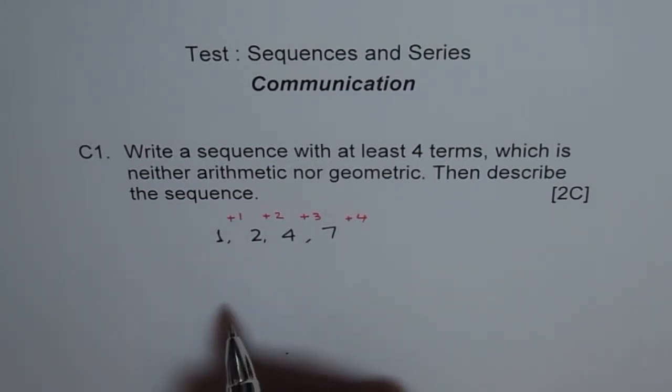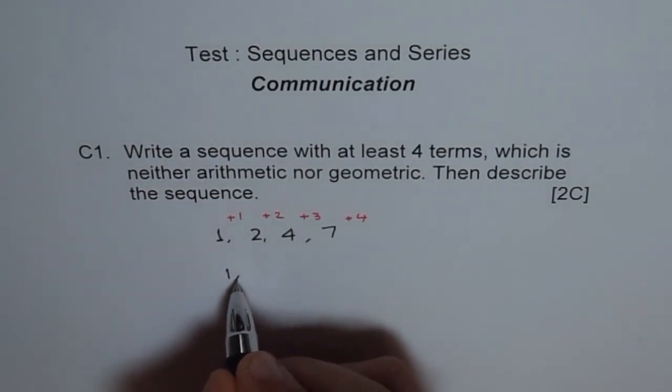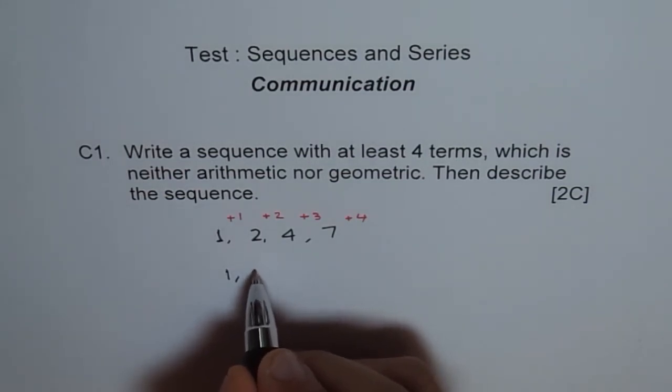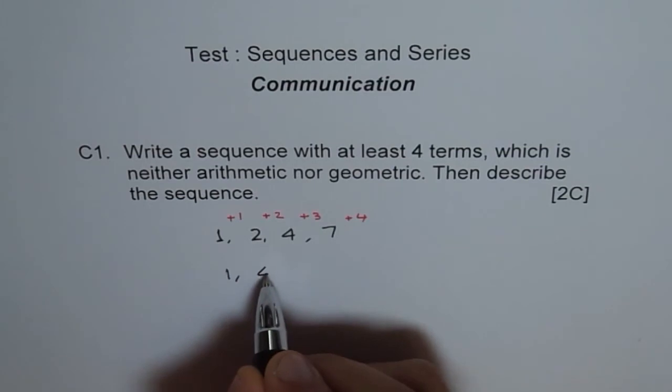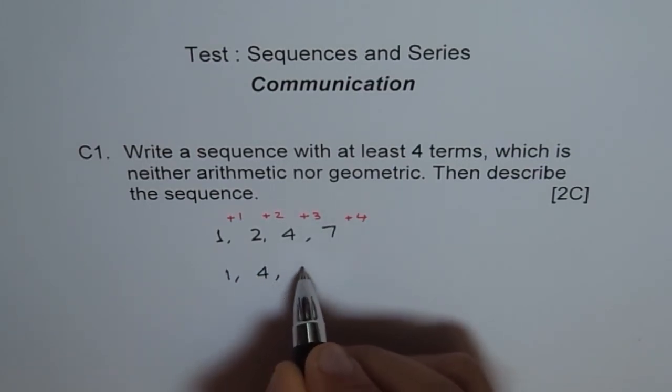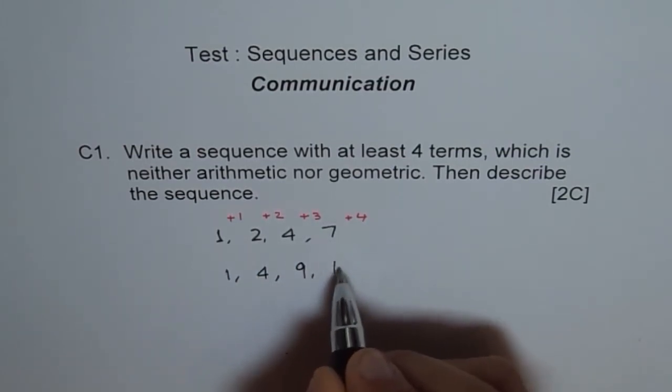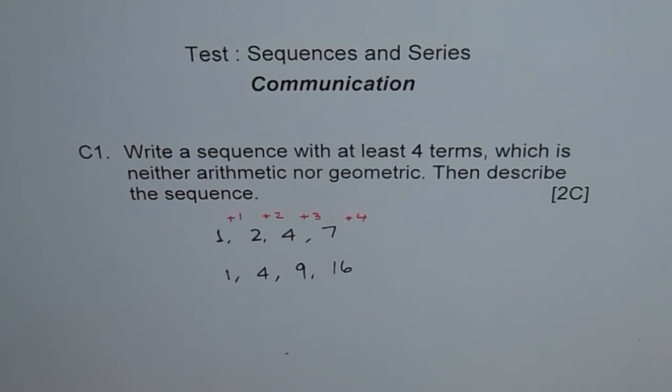I will rather take another sequence which will be like x squared. For example, I can write here one. So this is one squared. And then I will write two squared which is four, and three squared which is nine, four squared which is sixteen. So I get another sequence.